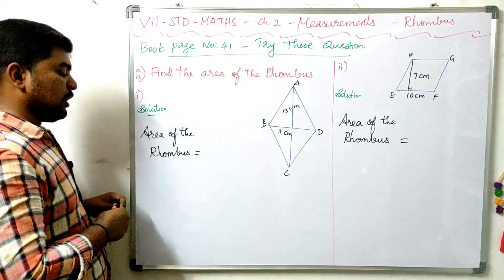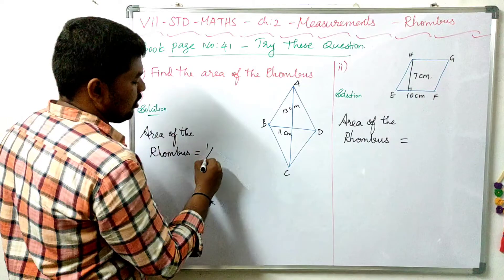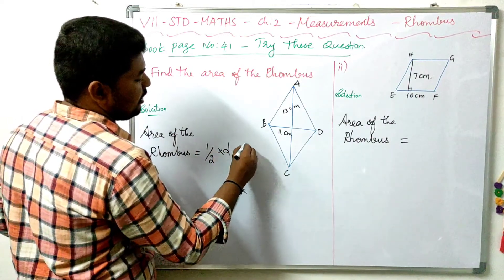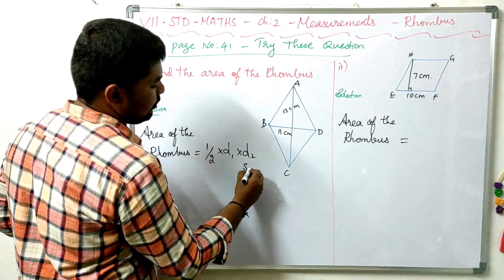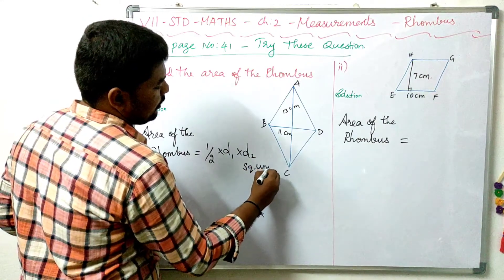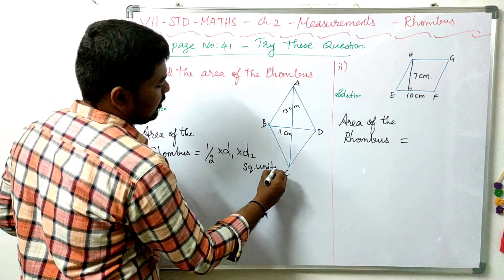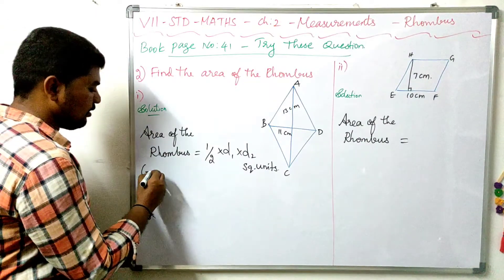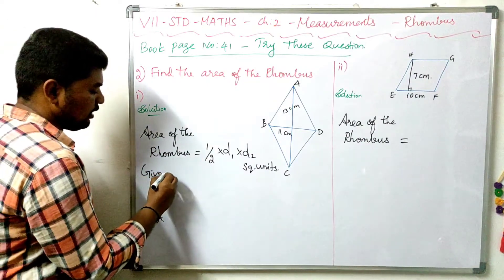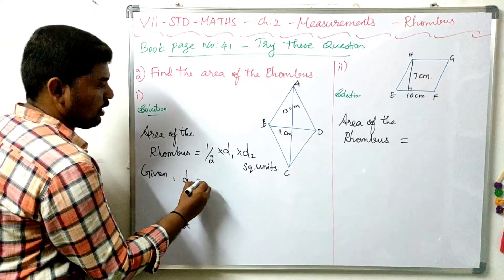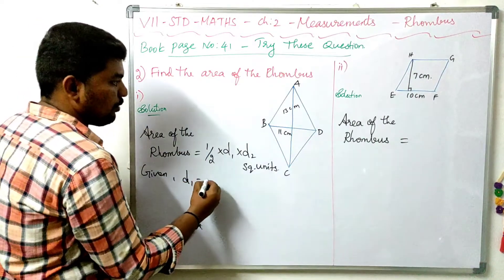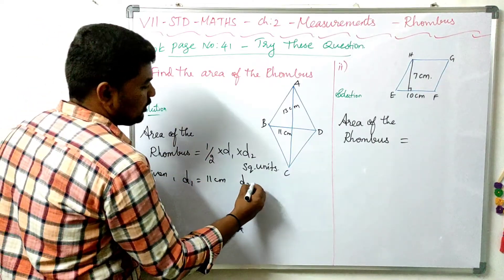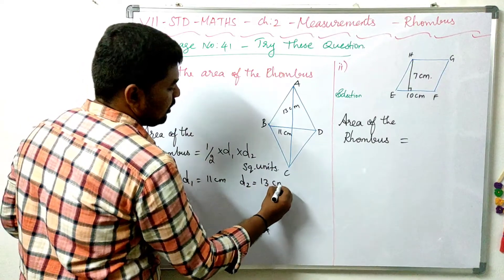Area of the rhombus equals half into d1 into d2 square units. Here, d1 and d2 are the diagonals. Given: d1 is 11 centimetres and d2 is 13 centimetres.